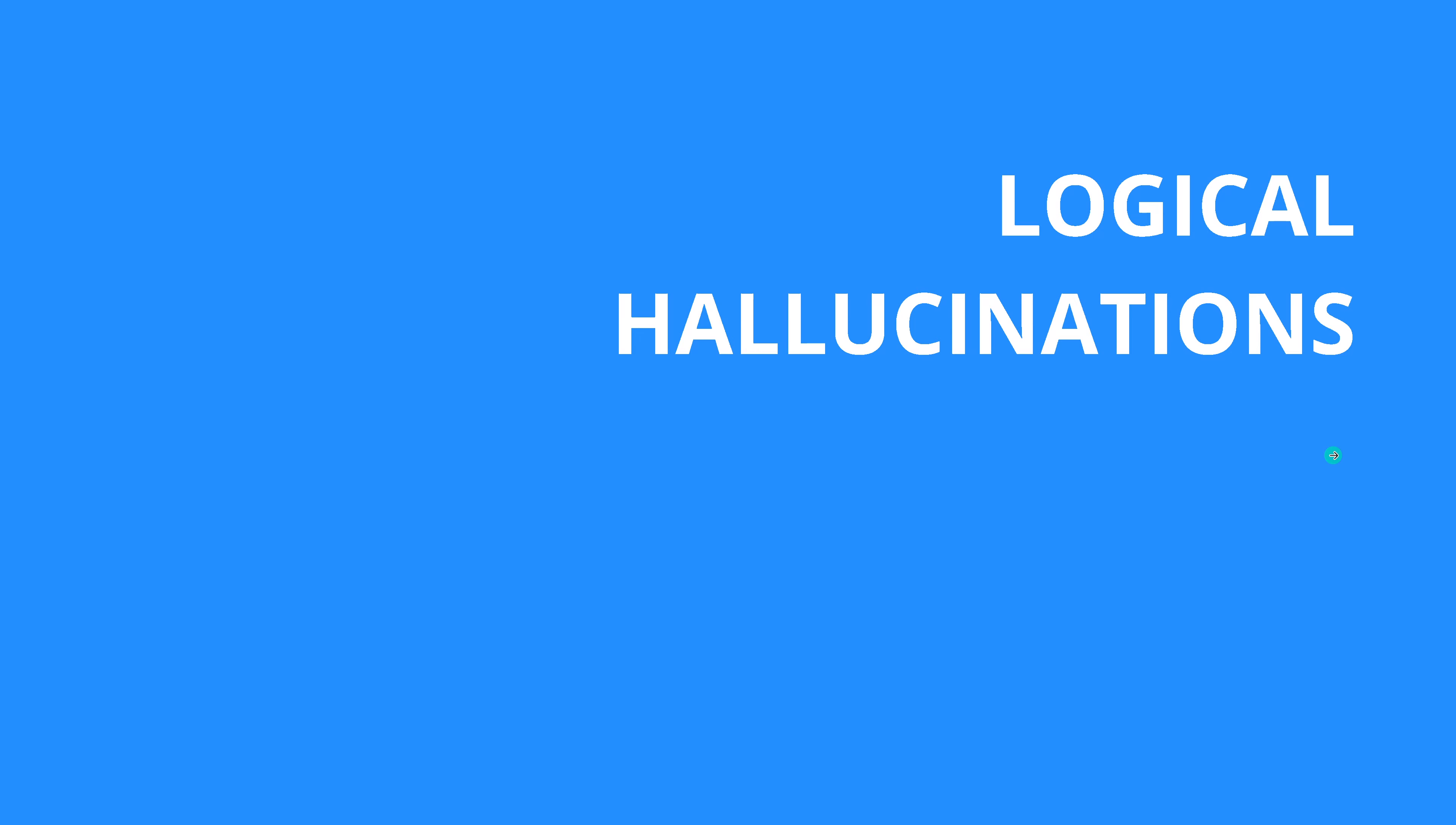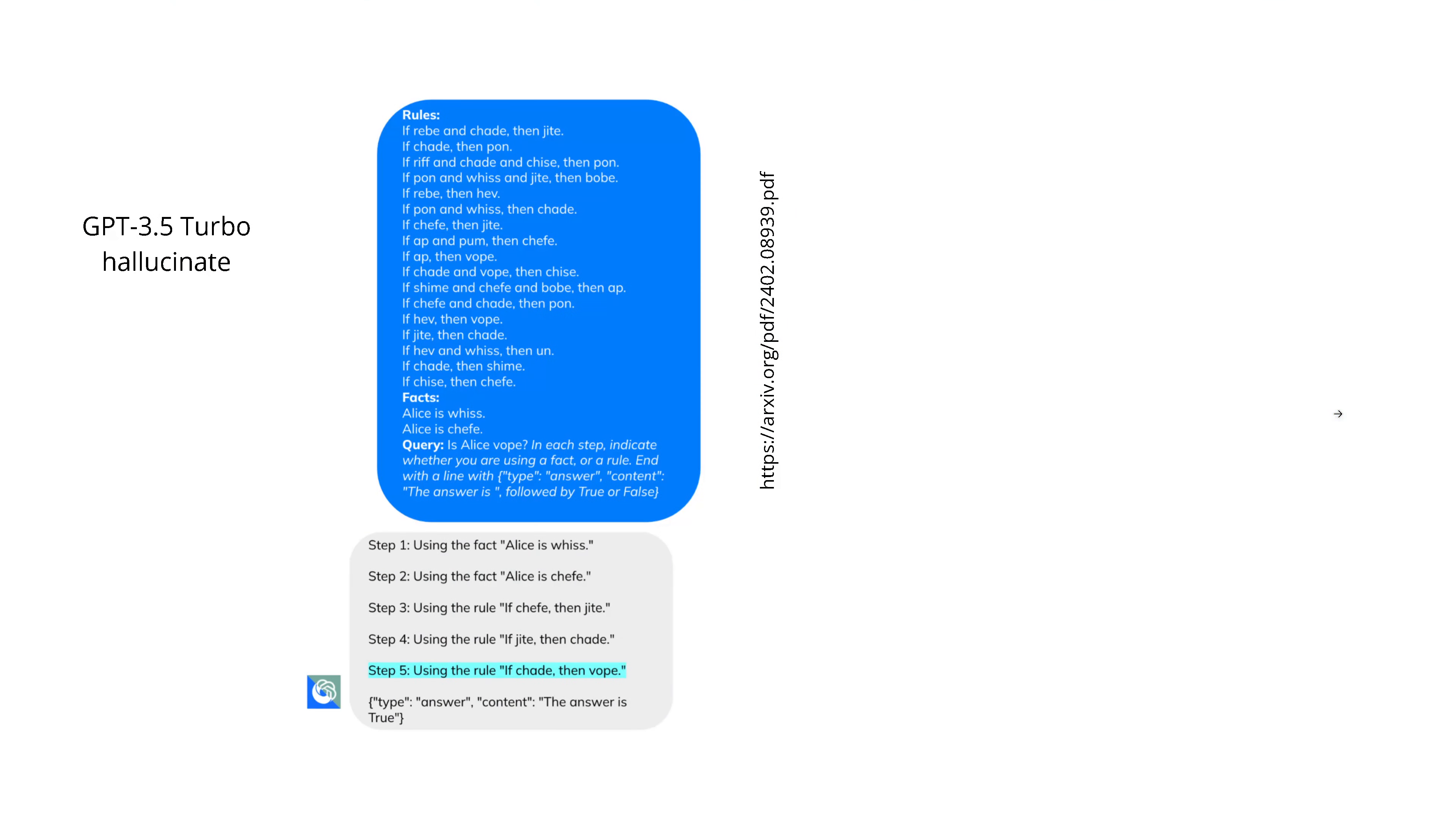What they found: the systems have logical hallucinations. And you thought hallucinations are fine, but now we have logical reasoning hallucinations in addition to the rest. So what am I talking about? Here we have Chat GPT, GPT-3.5 Turbo. We have I don't know, 20 rules, some nonsense rules. Think about this as mathematical operators, never mind. This is a mathematical logical chain.